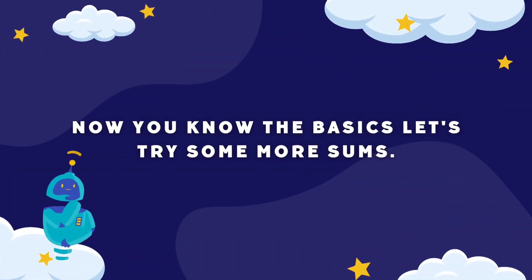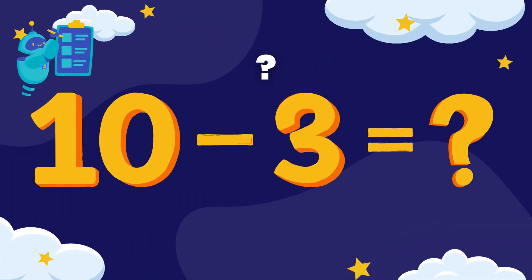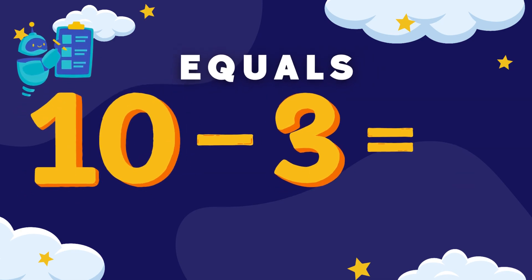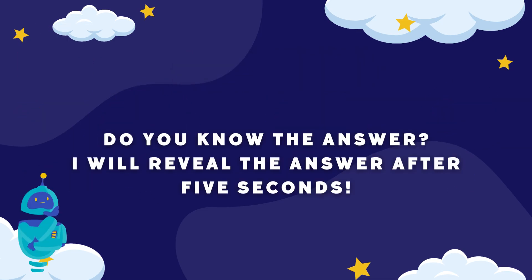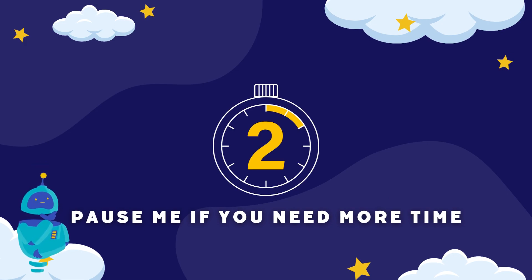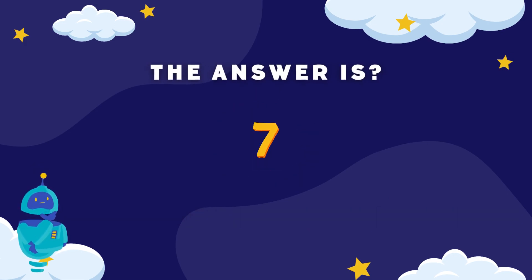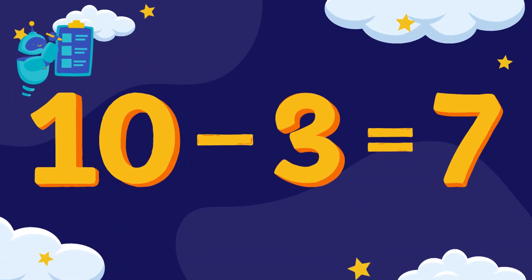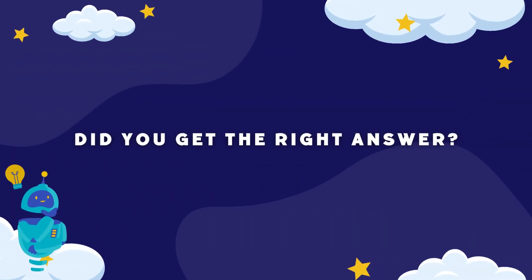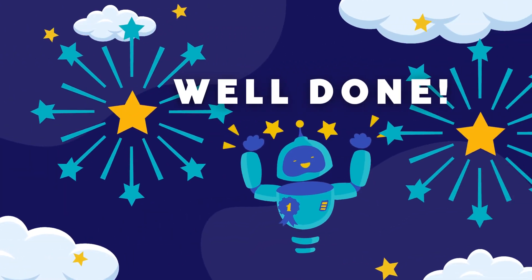Now you know the basics, let's try some more sums. What is ten minus three? Ten minus three equals... The answer is seven. So ten minus three is seven. Did you get the right answer for ten minus three? Well done for following along.